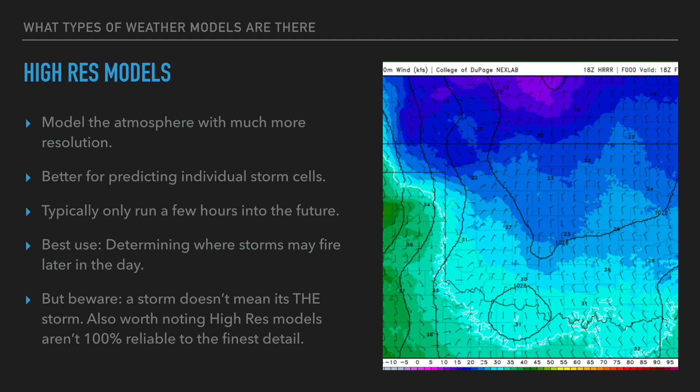But buyer beware — a storm on a model doesn't mean it's the storm. The most famous recent case would be Easter day last year, where the HRRR was firing a big supercell in the Texas Panhandle and not much along the outflow boundary in northwest Oklahoma. Those supercells in the Panhandle were robust and did happen, but they weren't in an environment that actually supported tornadoes well. While the storm on the outflow boundary formed — models didn't handle it — but it formed in a great tornado environment and it happened.